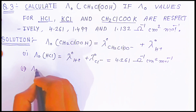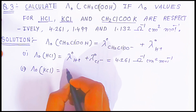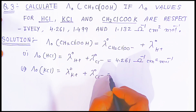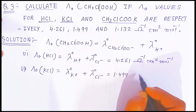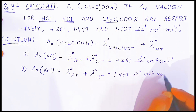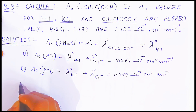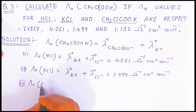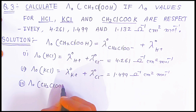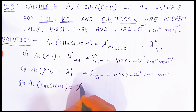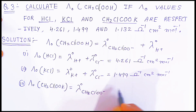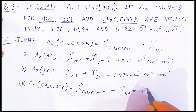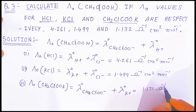For equation two, the molar conductivity at zero concentration of KCl gives us λ⁰ of K⁺ plus λ⁰ of Cl⁻, which equals 1.499 ohm⁻¹ cm² mol⁻¹. For equation three, the molar conductivity at zero concentration of the potassium salt of monochloroacetic acid (potassium monochloroacetate) equals 1.132 ohm⁻¹ cm² mol⁻¹.